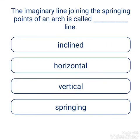The imaginary line joining the springing points of an arch is called the springing line. The answer options were: interlint, horizontal, vertical, and springing. The answer is springing line.